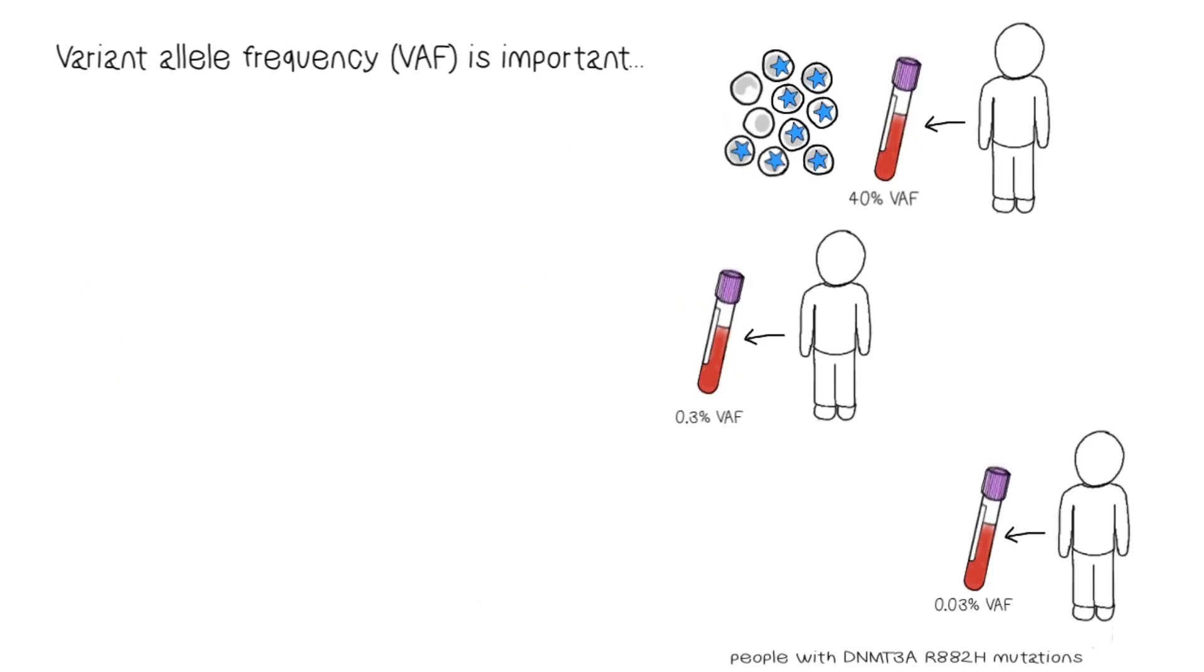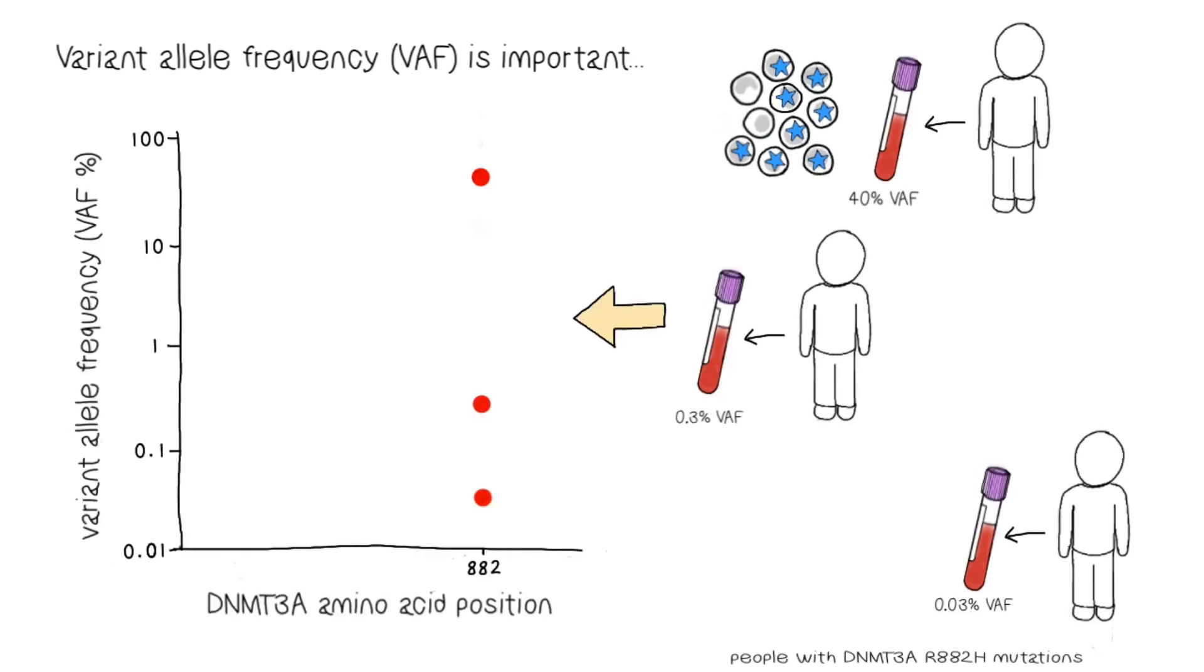The proportion of blood cells carrying the mutation, reflected in the variant allele frequency, is also known to affect the risk of blood cancer. But simply looking at the variant allele frequency is problematic because it is so variable between individuals, even for a specific variant.